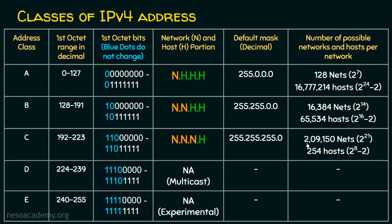To be precise, there are 2,097,152 networks, wherein each network will have a maximum of 254 hosts. Why 254 hosts? Because only one octet is left for the host portion. The starting address will be zero and the last address will be 255, giving 256 possibilities. Out of 256, we subtract two because the first address is the network address and the last is the broadcast address. So we can use 254 IP addresses.